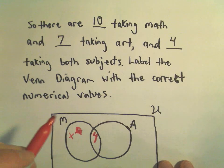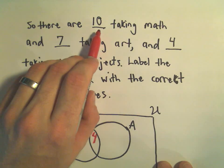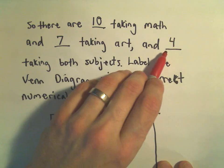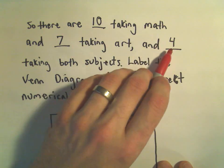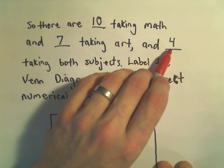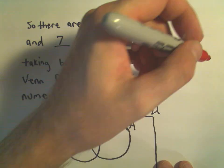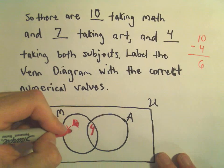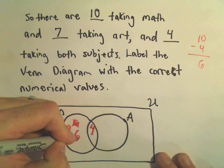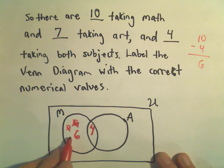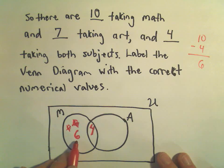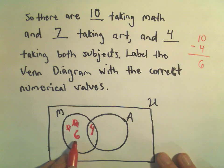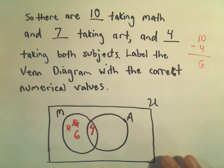Likewise, we could deduce that. We know that there are ten people taking math total. But we're kind of double counting because four of those are taking both subjects. So what we can do is we can just take ten minus four. That's going to give us six, and that's going to be the value that's going to go inside the M circle but outside of the A circle. So this says there's six people taking math but not art.